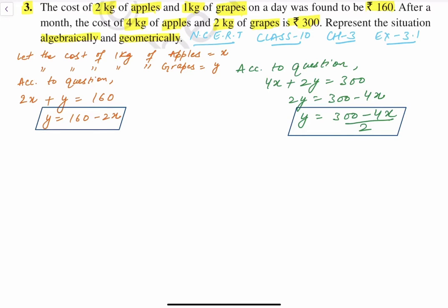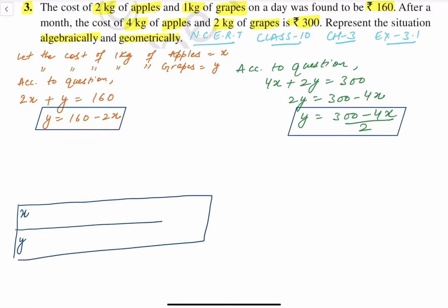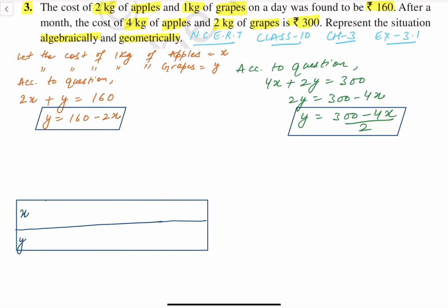Now, यह तो हो गई हमारी algebraical equations. Now we have to make a graph. For the graph, we need to make a table first. To build the table, we need to assume x and y values. Because it's a fairly large number — 160 — we will take values in steps of 10, 20, 30, 40.